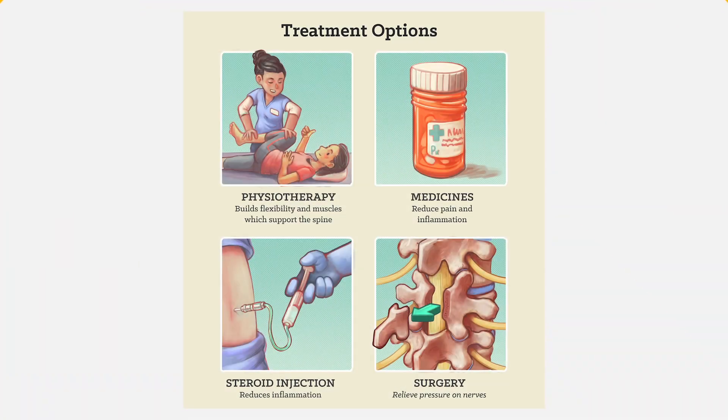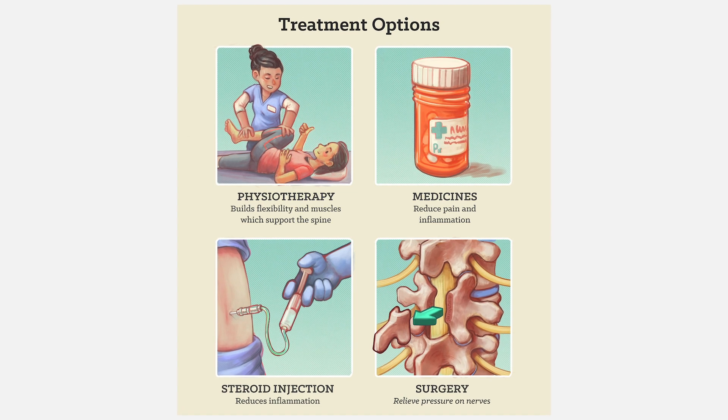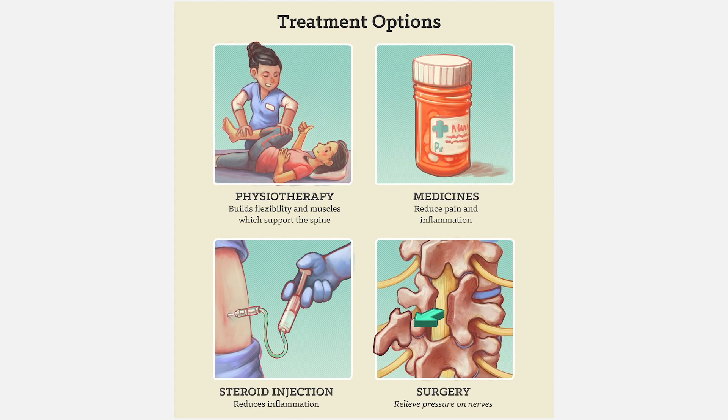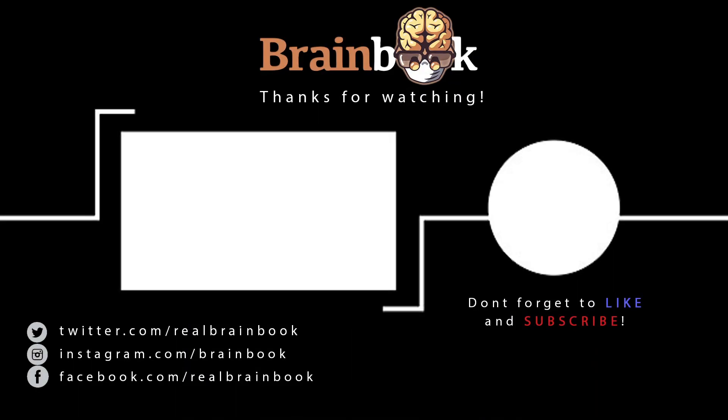Surgery usually aims to relieve pressure on the nerves so that they stop getting worse and often improve. The decision to have an operation is a very personal one and should be made in conversation with your surgeon as well as with your family. You need to carefully consider the risks and the possible complications along with the potential benefits of surgery, as well as consider the full range of alternatives to surgery such as specialised exercises through physiotherapy, pain medications, and injections.